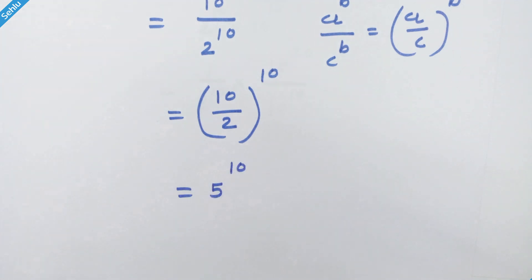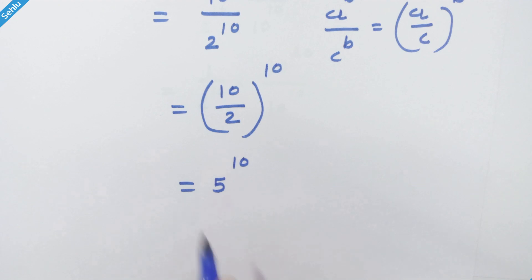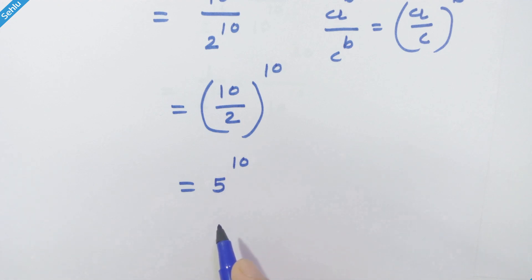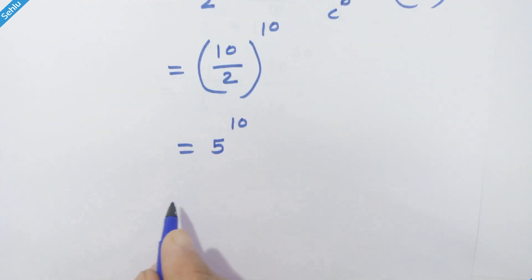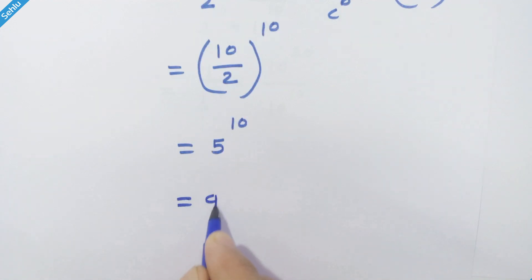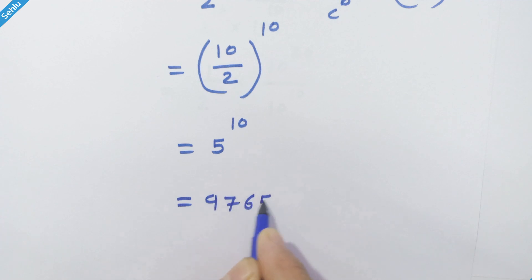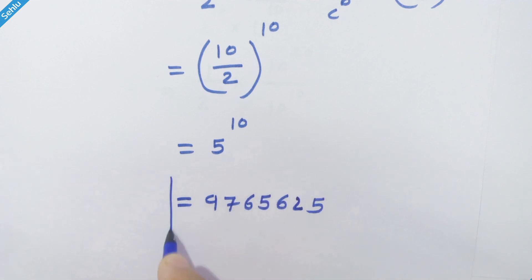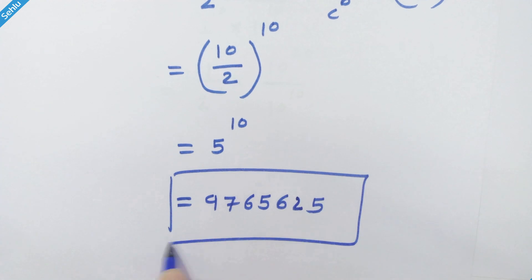10 upon 2 is 5, so we can write it like 5 raise to 10. This is the simplified version of the given expression and this is our answer. 5 raise to 10 equals 9,765,625. Thanks for watching, see you in the next one, bye bye!